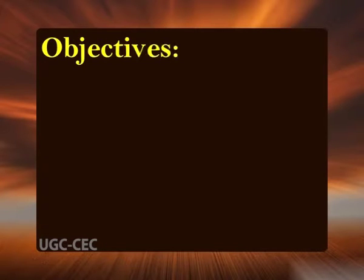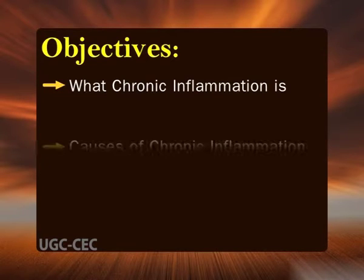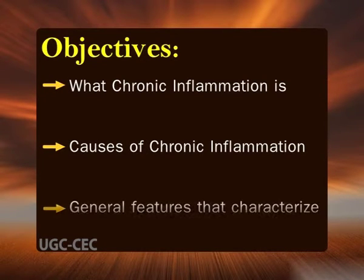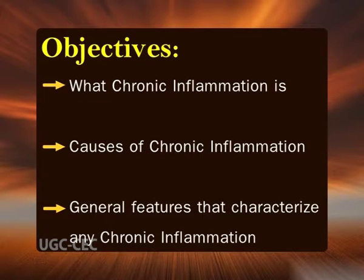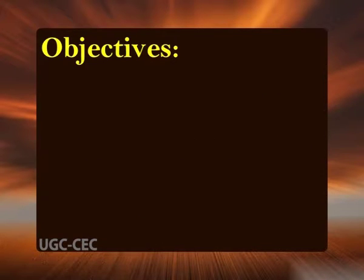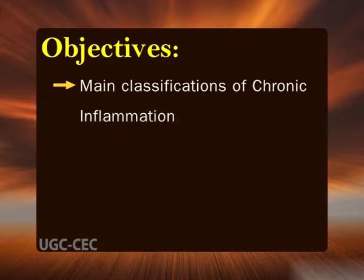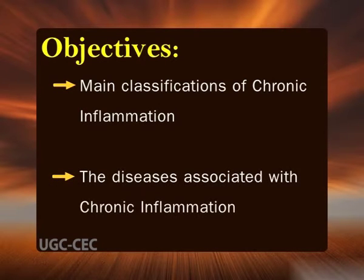Hello dear students, today we are going to discuss general features, causes and examples of chronic inflammation. The main objectives of the topic are to understand what chronic inflammation is, its causes, the general features that characterize any chronic inflammation, main classifications of chronic inflammation, and the diseases associated with chronic inflammation.